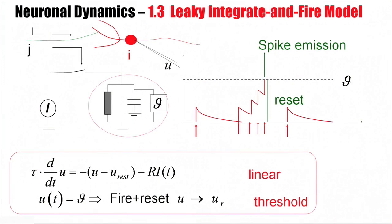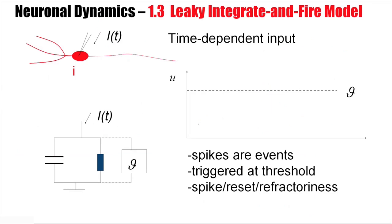Now, more generally, I can drive my neuron model also with time-dependent input current. So let's suppose we have some arbitrary time-dependent input current. We would integrate this until the threshold is reached. Afterwards, the membrane potential is reset, and the whole process starts again.